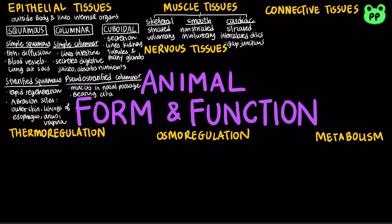Nervous tissue sends stimuli and transmits signals. Neurons transmit impulses via axons. Glia nourish, insulate, replenish, and modulate neurons.